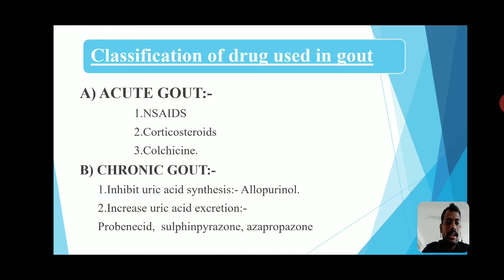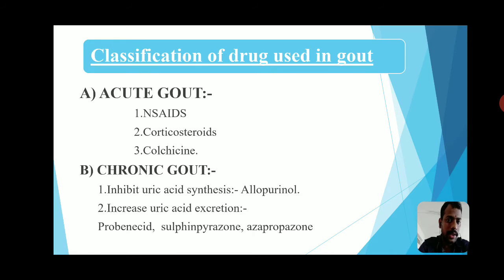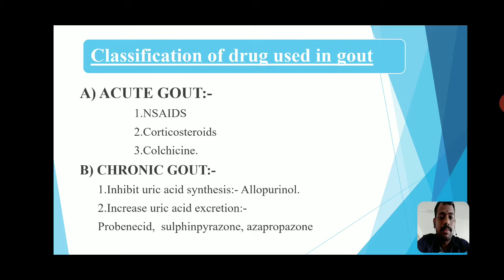Classification of drugs used in gout: various anti-gout drugs are used in treatment. For acute gout, three drugs are used: NSAIDs (non-steroidal anti-inflammatory drugs), corticosteroids, and colchicine. Colchicine is an alkaloid drug.